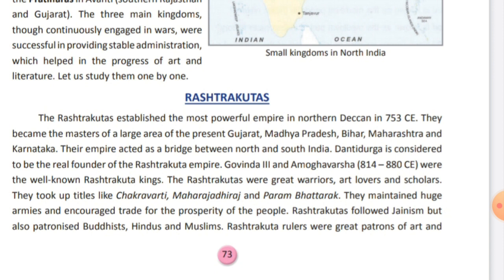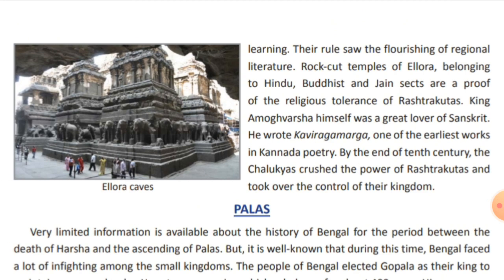They supported art, learning, and regional literature — that is, literature written in local languages — which developed greatly under their rule. King Amoghvarsha was a great lover of Sanskrit and wrote a book called Kavirajamarga in Kannada, the language of Karnataka. By the end of the 10th century, the Chalukyas crushed the power of the Rashtrakutas and took over control of their kingdom.